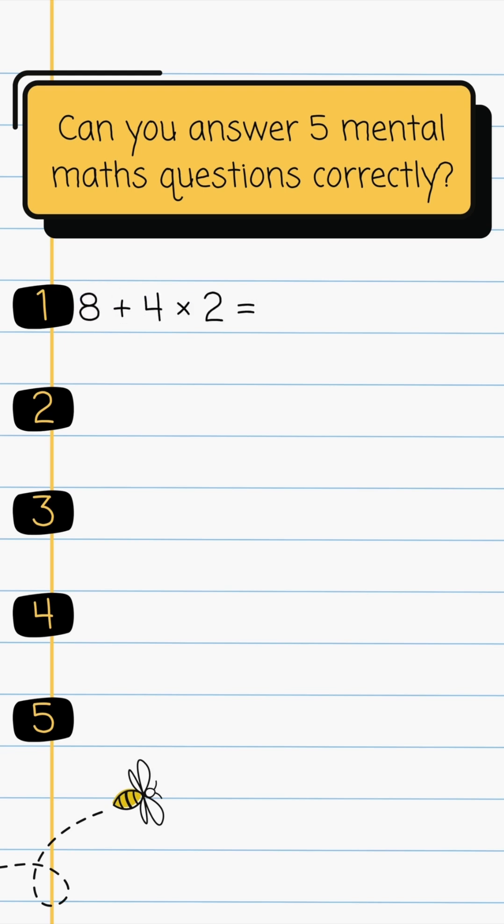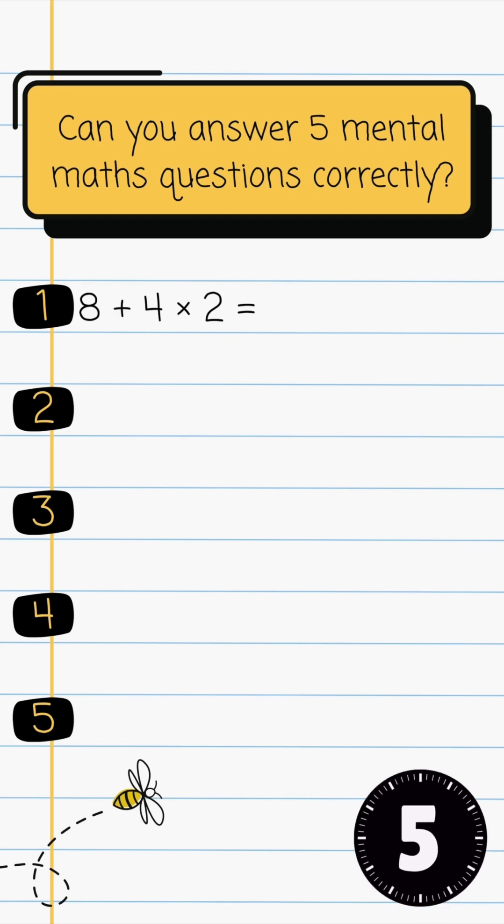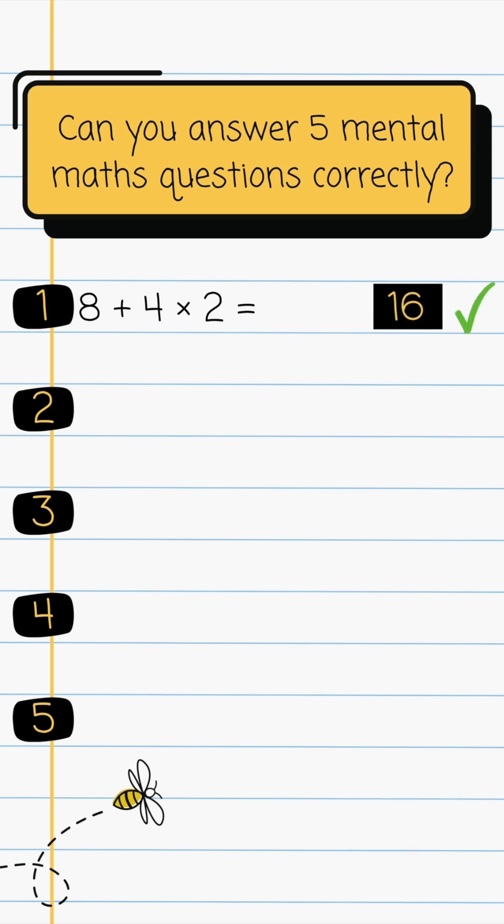Question 1. 8 add 4 multiplied by 2. The answer is 16.